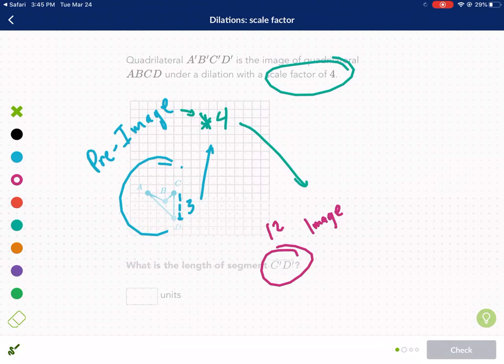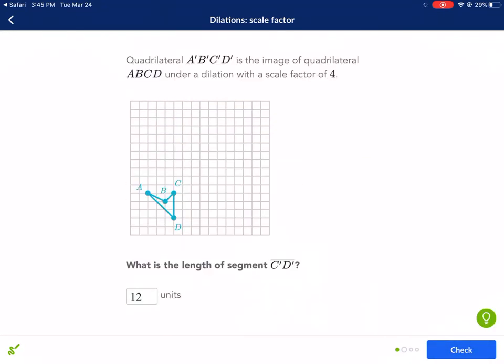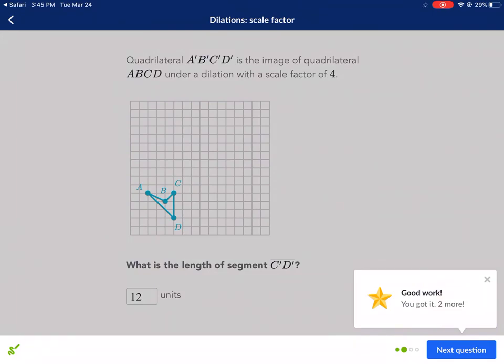So let me go ahead and type that in, 12 units, check it, got it right. Hope you guys find this to be pretty easy. It's not too bad, but it's a great intro into dilations. See you next time.